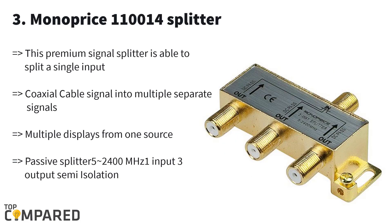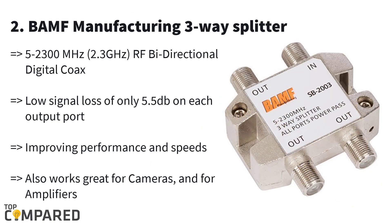Third on this list is a three-way splitter offering single input and multiple output ports for the coaxial cable to transmit internet to various destinations. This is ideal for those aiming to display on different devices at the same time from a single source. The passive splitter has a range of 5 up to 2400 MHz.